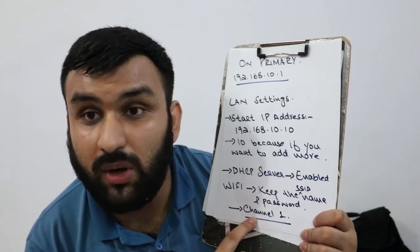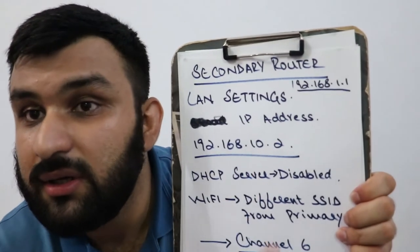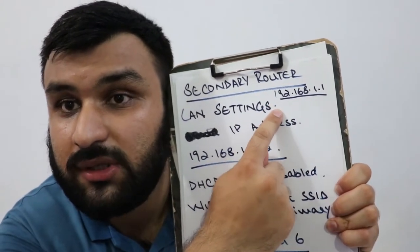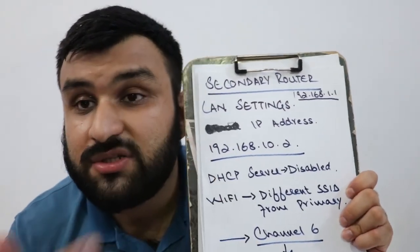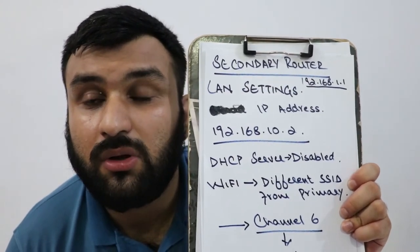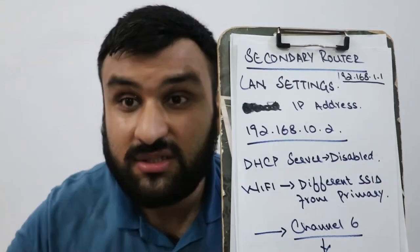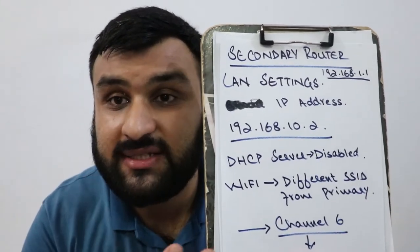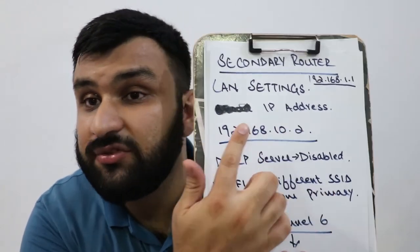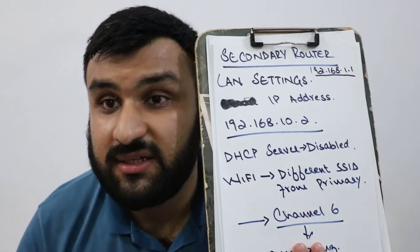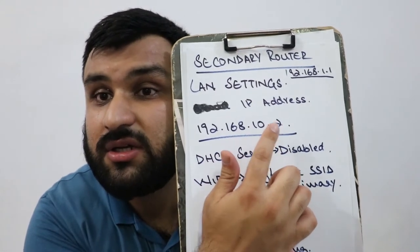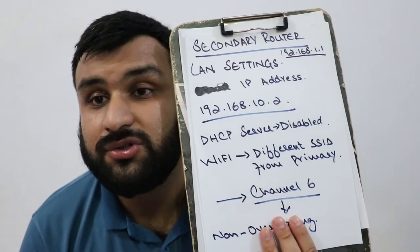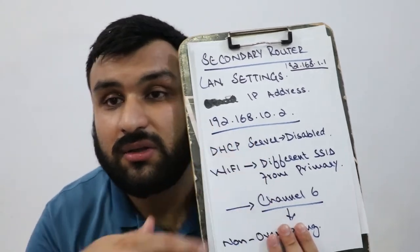For the secondary router, log in to its default IP address 192.168.1.1. Once you're in the router settings, go to the LAN settings and change the IP address of the router to 192.168.10.2, matching the third octet of the primary router.